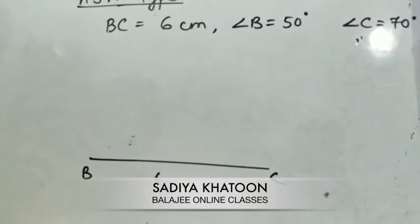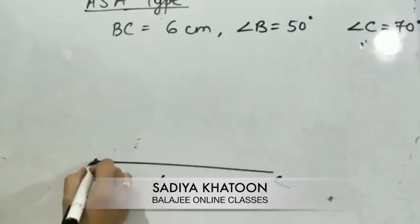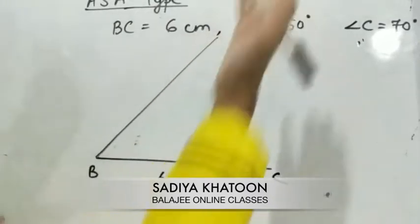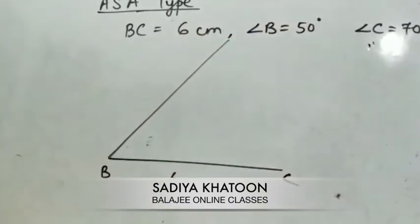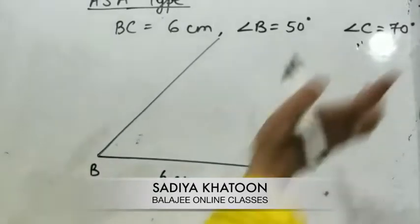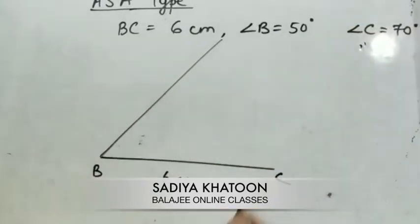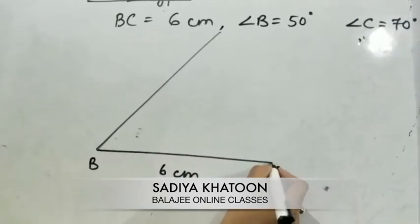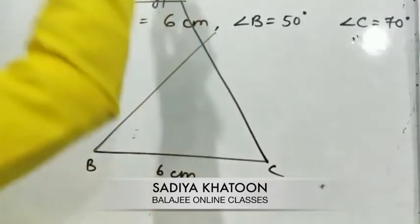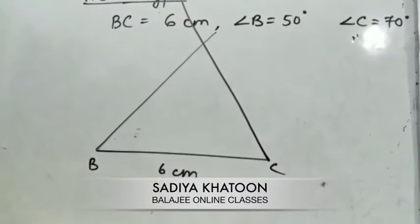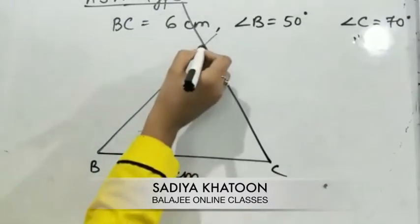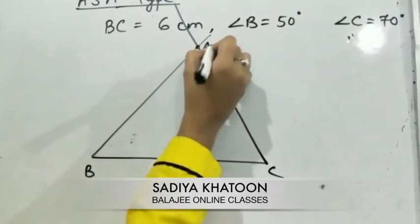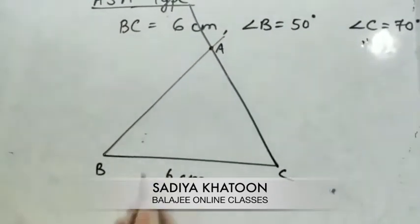Using the protractor, draw the 50-degree angle at B without any definite length — just extend the ray. Then draw the 70-degree angle at C using the protractor. Extend both rays and wherever they meet will be the point of intersection, which is point A. So you get the triangle.